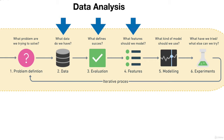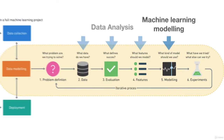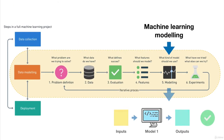And once you know a little bit more about the data, you decide to build a machine learning model using the features you found to predict some target. Now this is step five. Your first model goes pretty well — we've got the little green tick here. You've managed to line up the inputs, you've got a good model, you've matched the model to the problem and it's producing some good outputs.